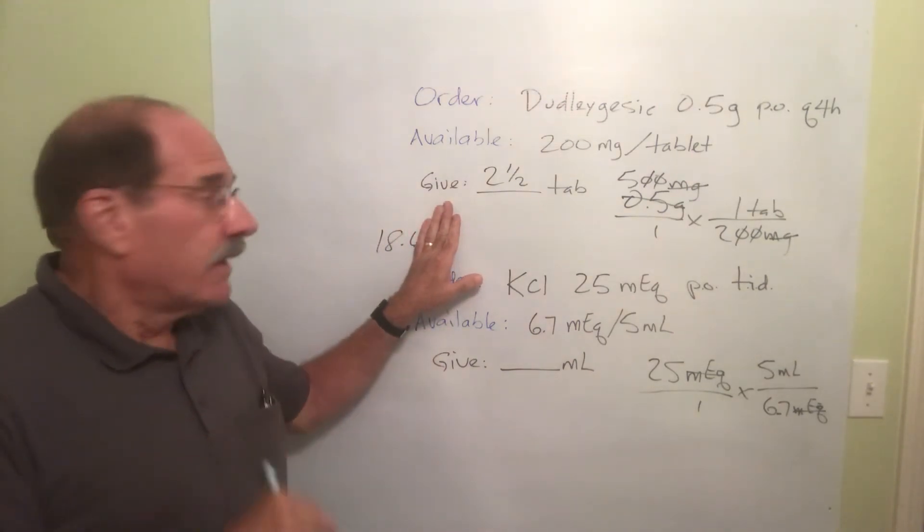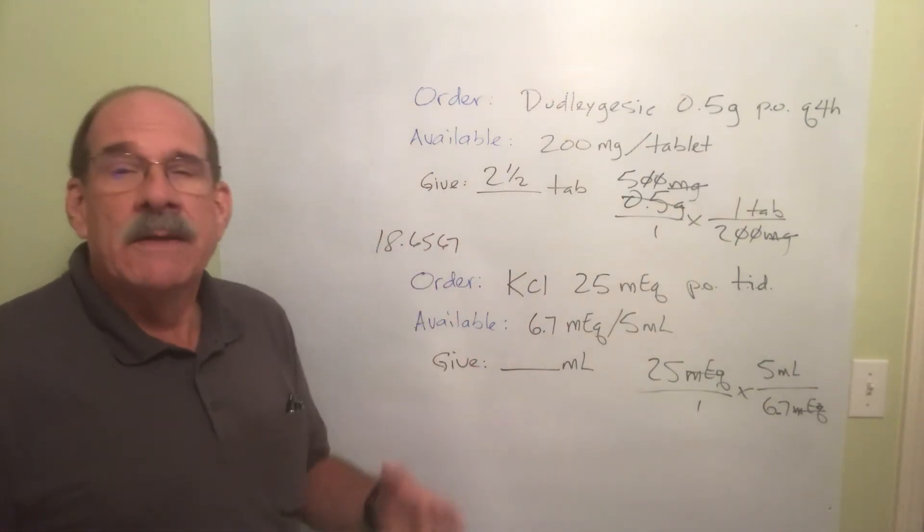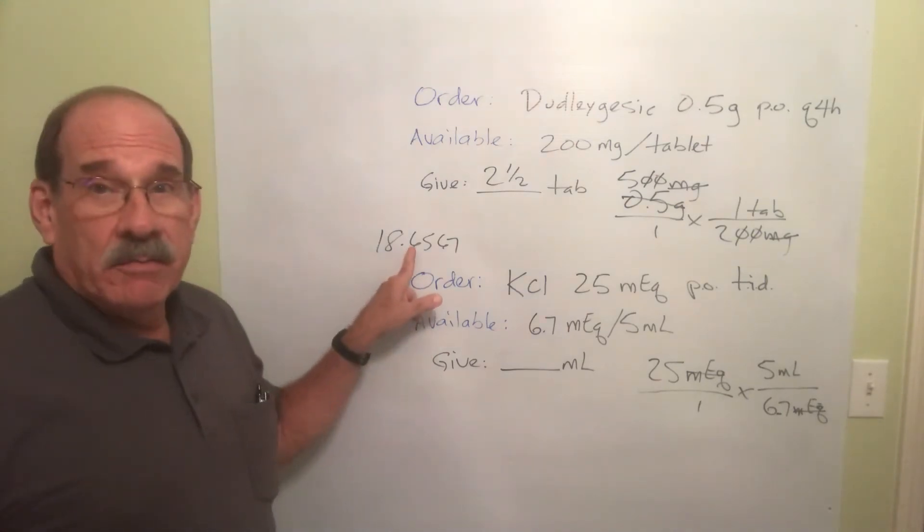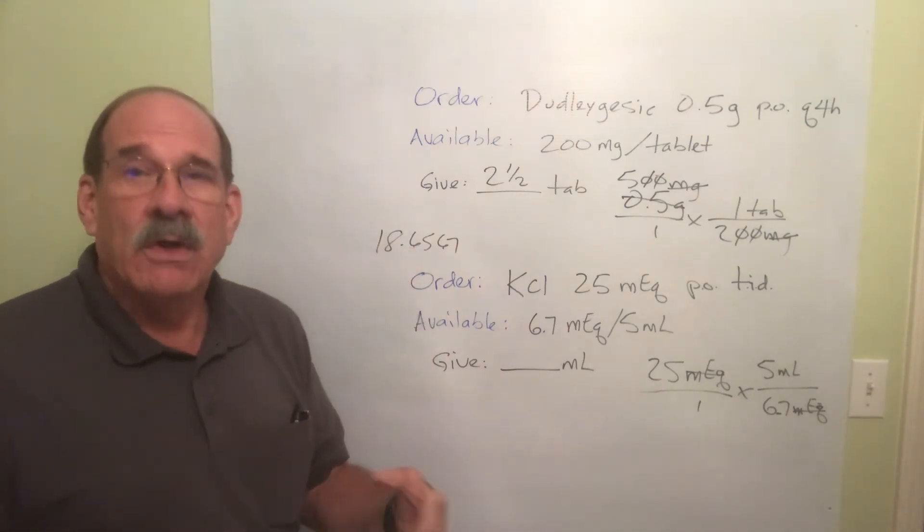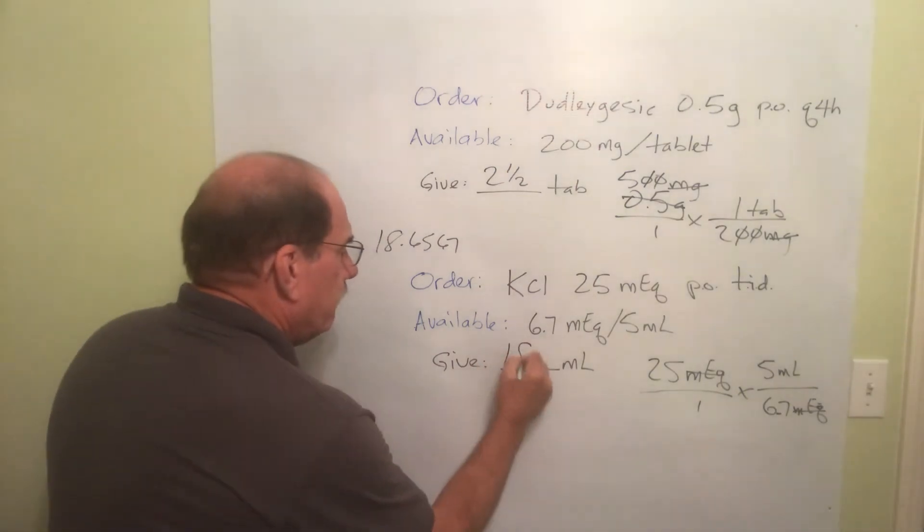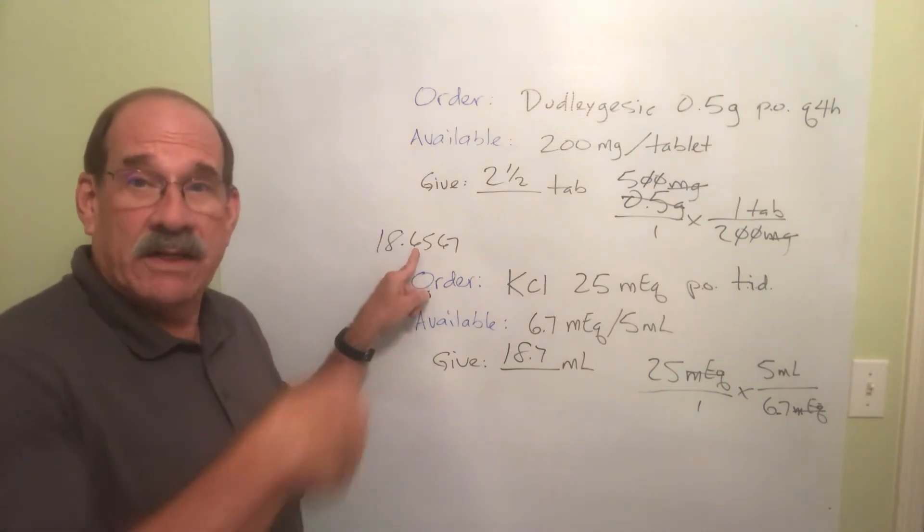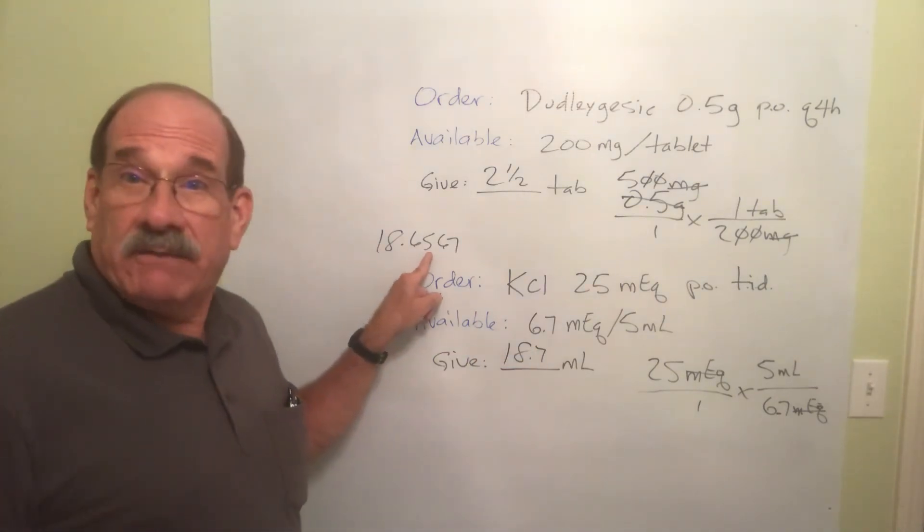But because the next number is 5 in this case or more. Yeah, 5 or more is 5. I make this the next higher number. So what is your final answer rounded off properly? Why the answer is 18.7. Because the 6 goes up to the next higher number because that's a 5.